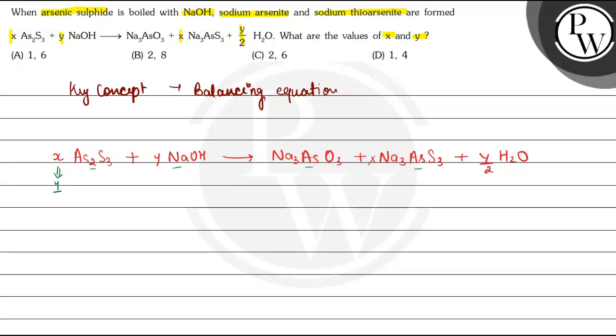Now move on to Na. Here only 1 sodium is present on reactant side, and on the product side there are 3 and 3, that means 6 sodium are present on product side. So if we multiply here with 6, then on the reactant side there is also 6 sodium.